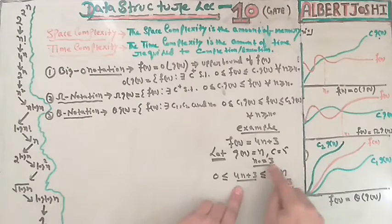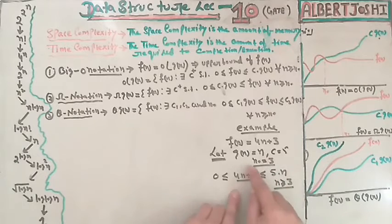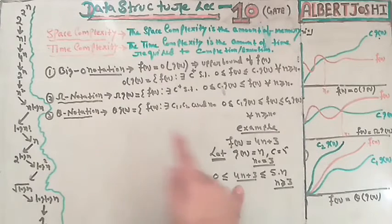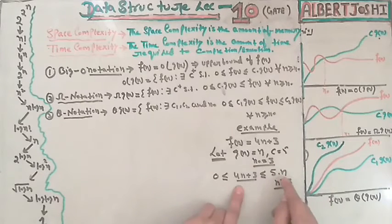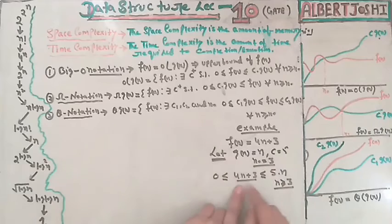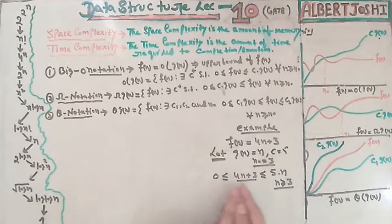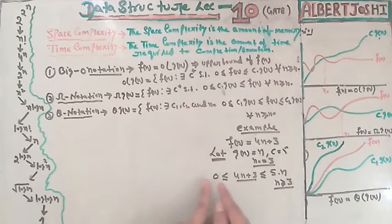For all n ≥ 3, the condition is satisfied. This means f(n) = 4n + 3 is upper bounded by 5n. So this function is upper bounded — meaning the software tester confirms this is not necessarily the lowest time-taking algorithm, and checks whether a lower one exists.